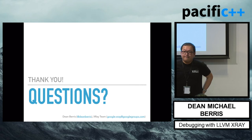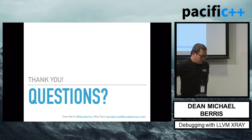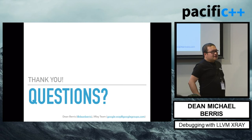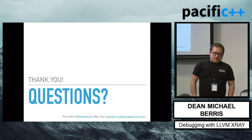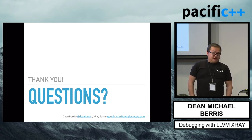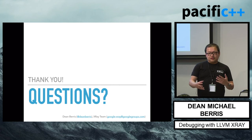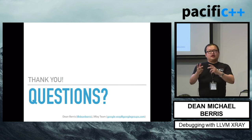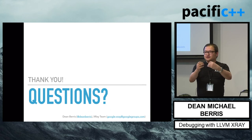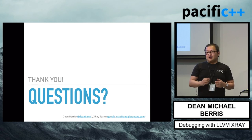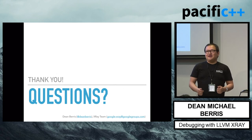Question: what happens if you try to instrument coroutines? Knowing how coroutines are implemented in LLVM, they look like normal functions. We don't have explicit support yet for whether an exit is an await or a resume, but it's certainly an interesting thing to try. If you do and it works, please let me know. If it doesn't work, please let me know and maybe we should fix it.